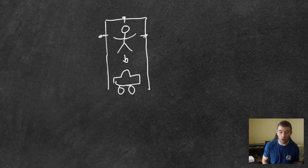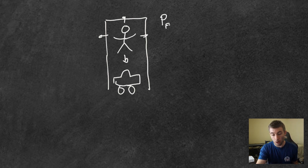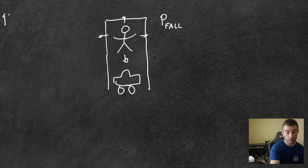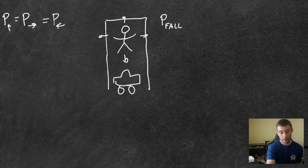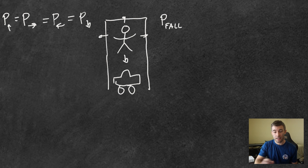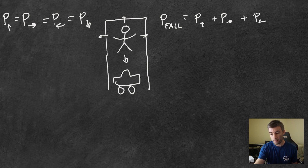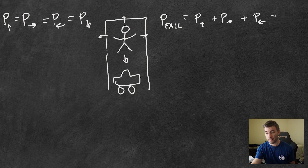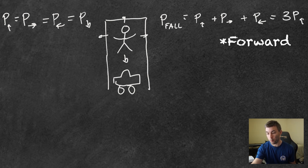I think our intuition tells us what the answer is. To be a little more quantitative: the probability that I fall — since each direction is equally likely — equals the probability of moving forward plus right plus left. Since we know these are all equally likely, we can write this as three times the probability of moving backward. And for me making it back to my car there's only one option: the probability that I move backwards.